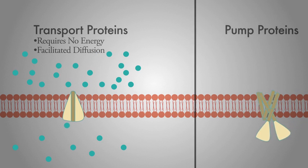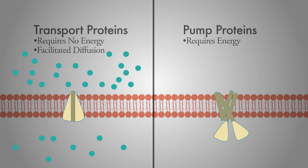The cell membrane also contains pumps that require energy in the form of ATP. Because using pumps to move solutes across a membrane requires energy, it is called active transport.